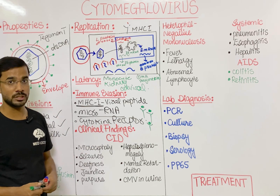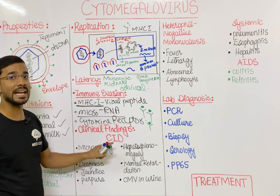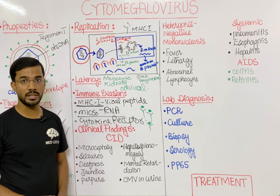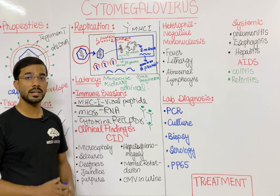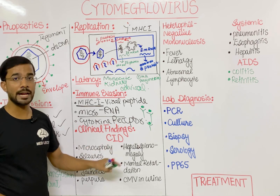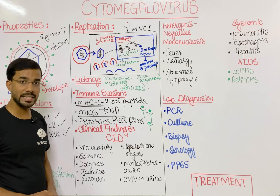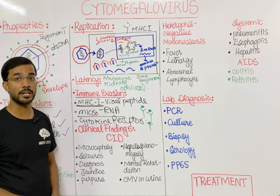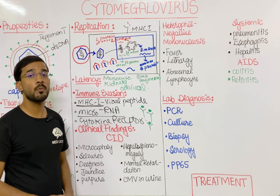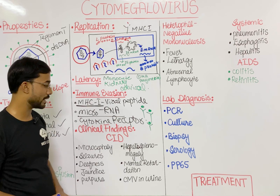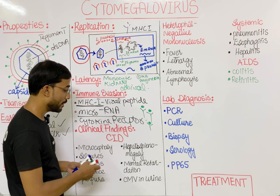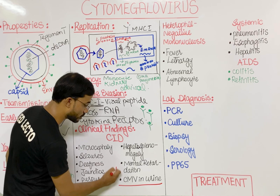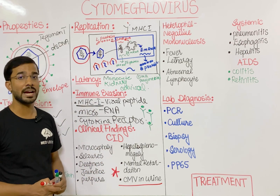Looking at the clinical findings, the most important disease caused by CMV is cytomegalic inclusion disease (CID). It most importantly causes congenital abnormalities, specifically in the first trimester of pregnancy when organ synthesis occurs. In CID you will see microcephaly, seizures, deafness, jaundice, and purpura due to low platelet count (thrombocytopenia) — sometimes called the 'blueberry muffin' appearance. You can also see hepatosplenomegaly in infants and mental retardation. Importantly, the neonate will secrete cytomegalovirus in the urine, which is an important diagnostic criterion.